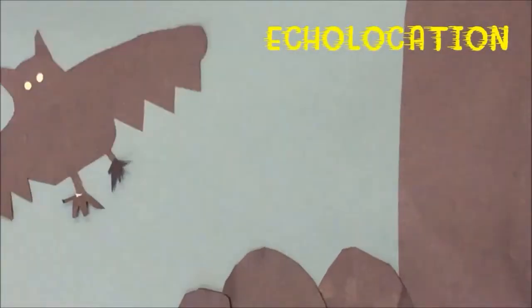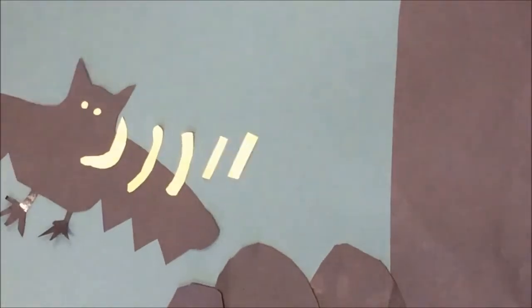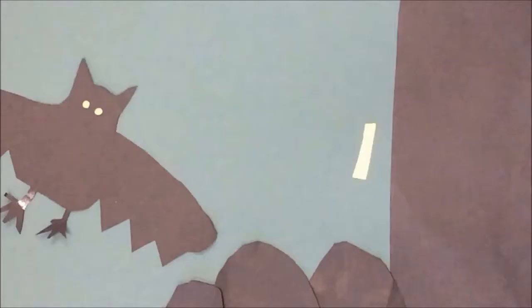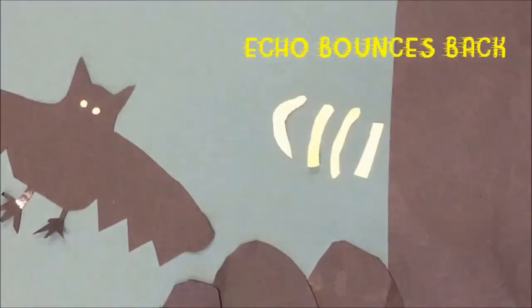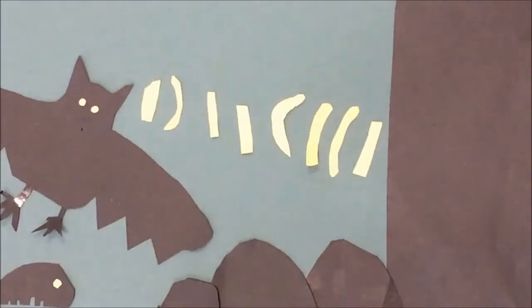Bats use echolocation to help them find their way around in the dark. They make high-pitched sounds that humans can't hear. When these sound waves hit an object, an echo bounces back. The bat collects the echo with its ears and can tell what the object is by the sound of the echo.